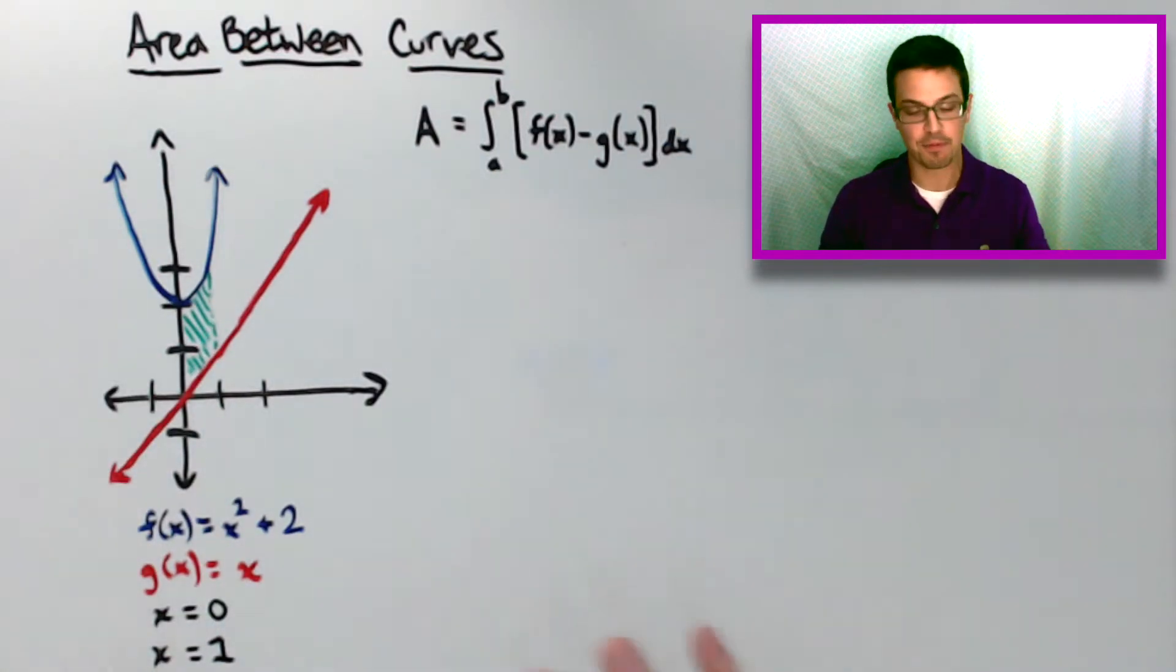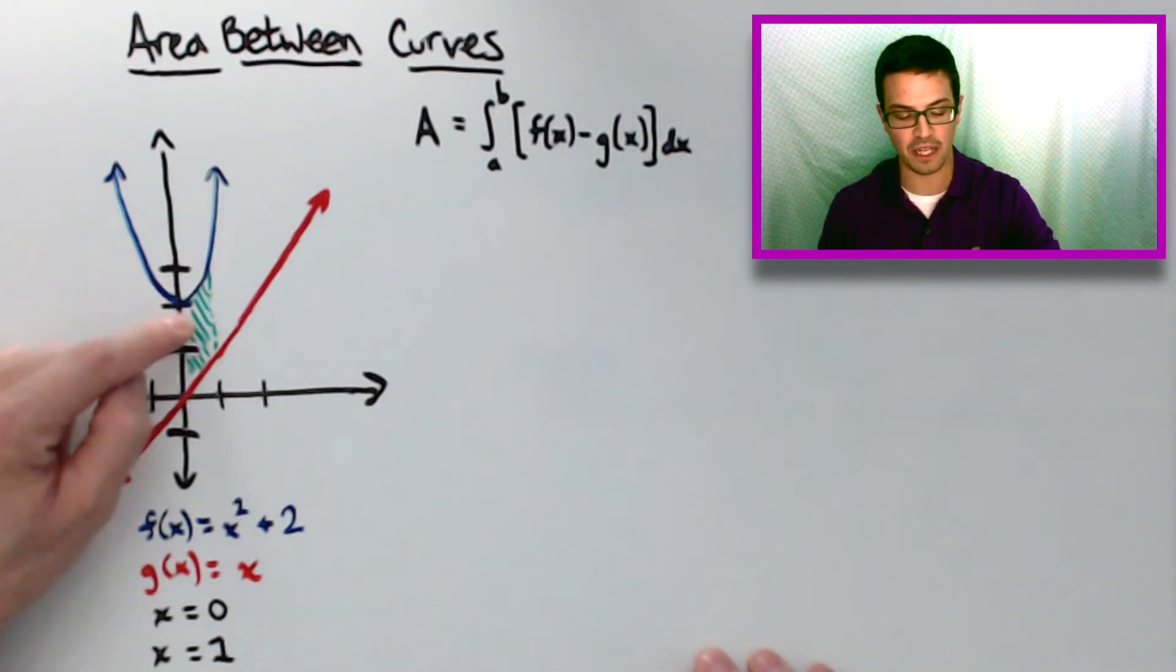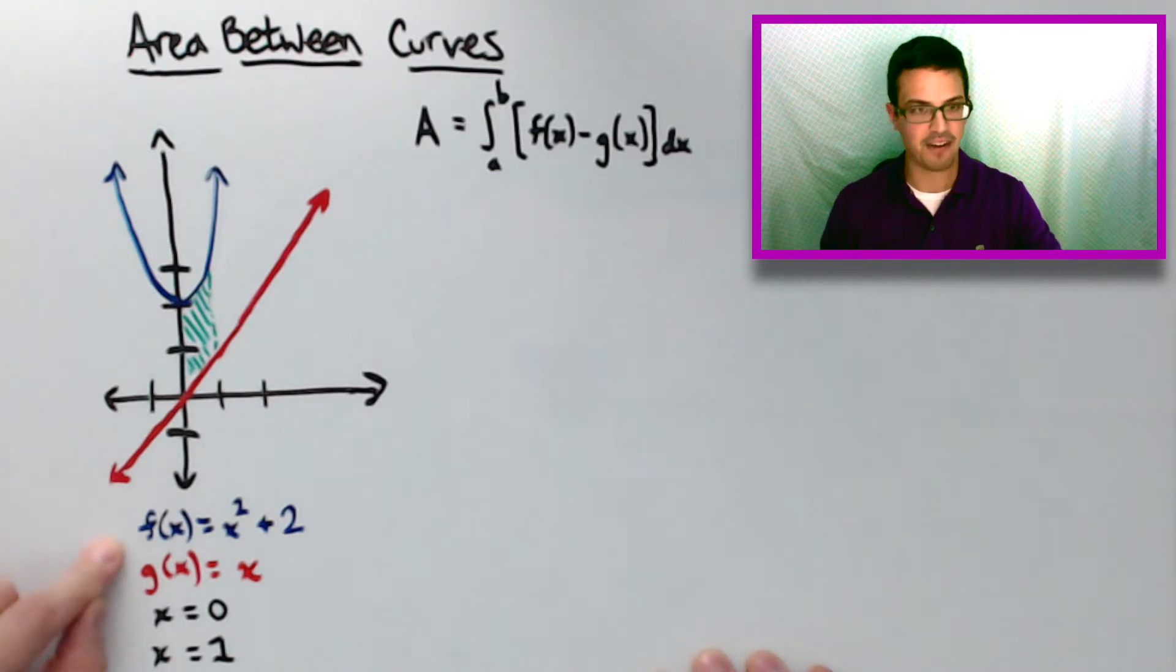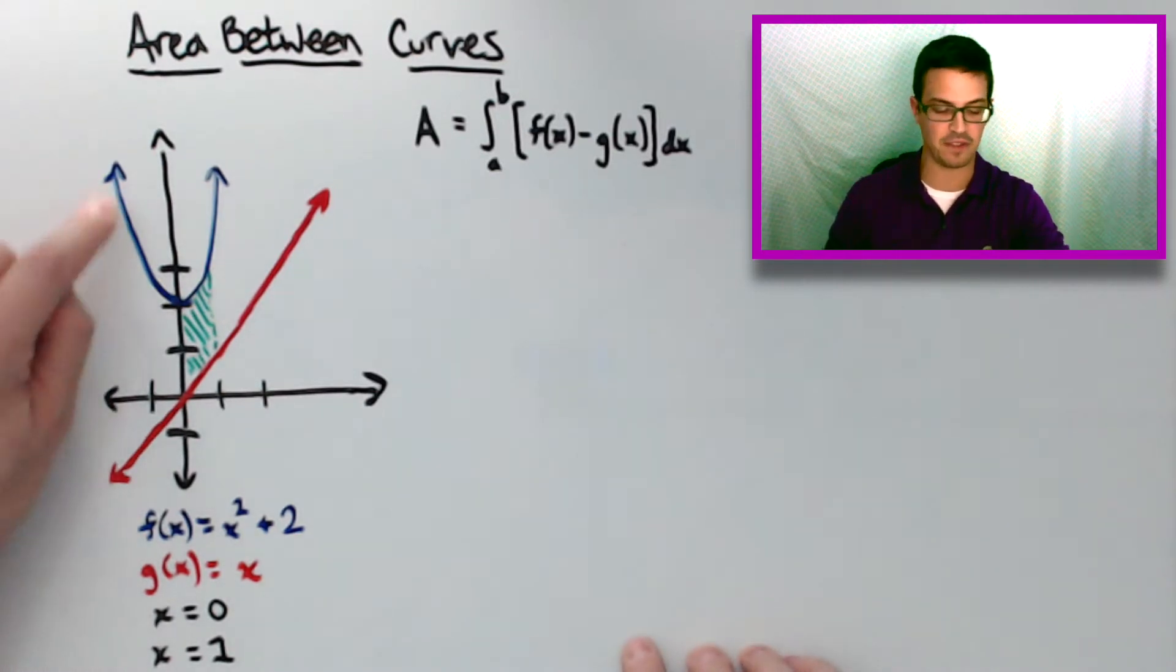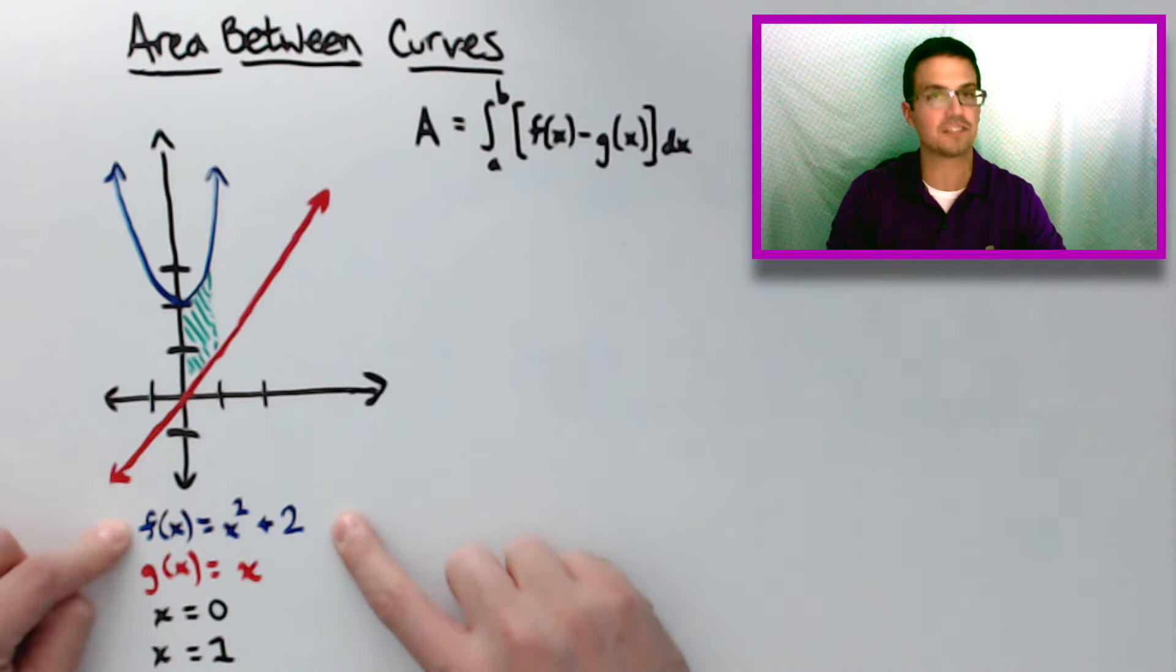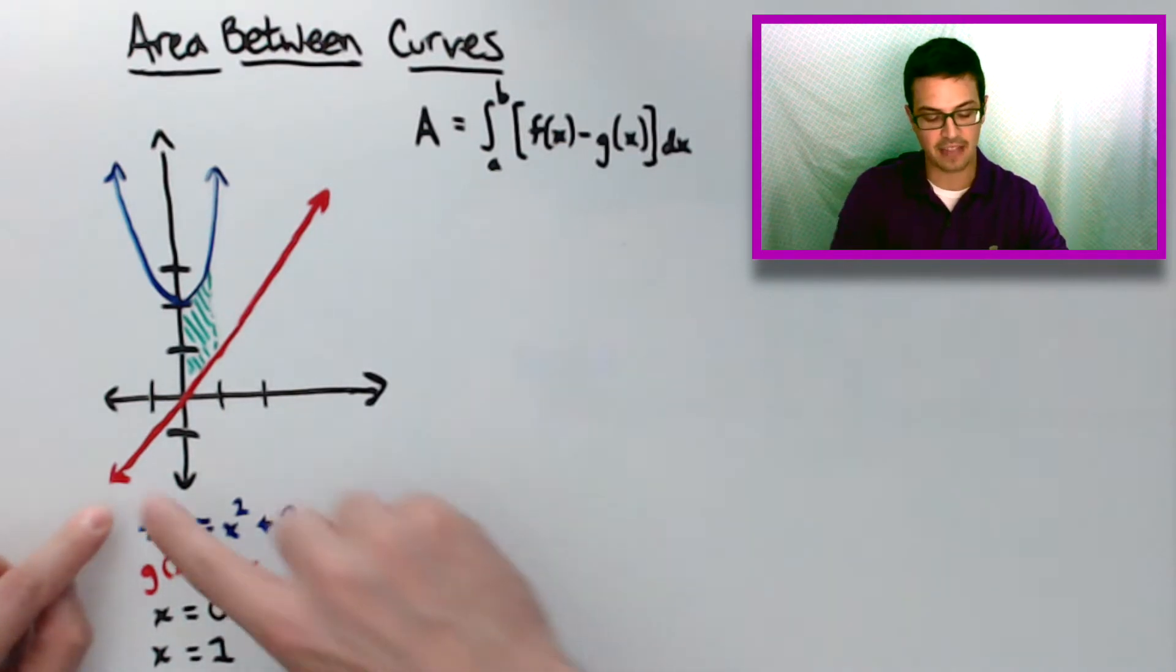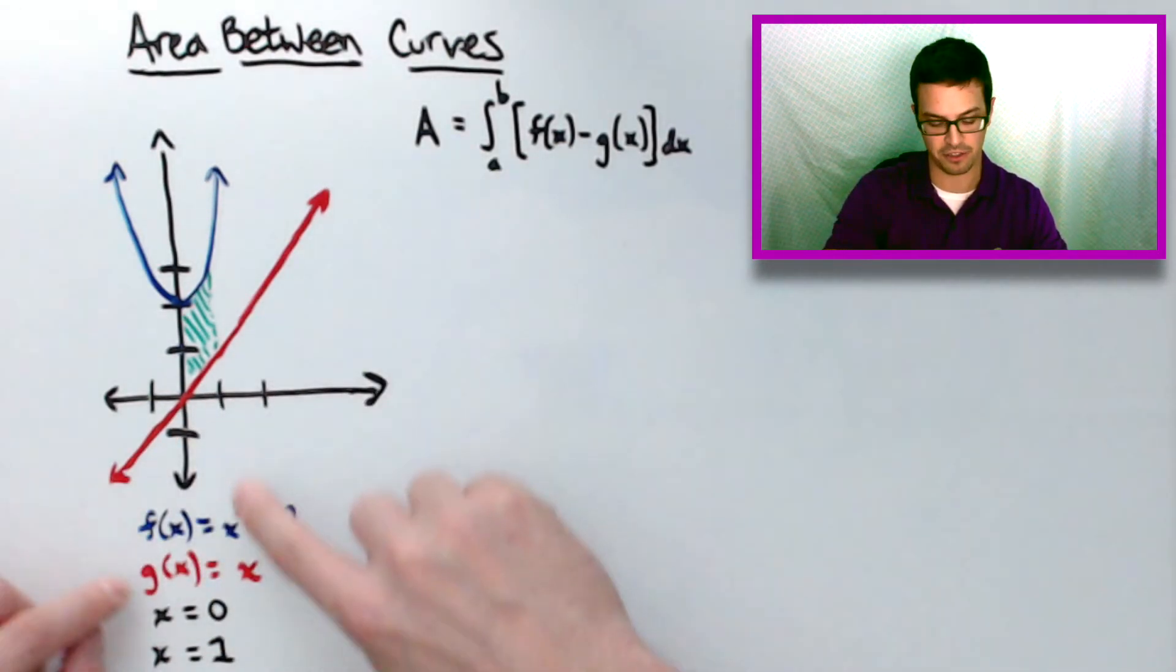And I'm trying to find, this problem is trying to find the area between these two and then bounded by the following down here. So we have f of x, we have this blue function right here, f of x is x squared plus 2. The g of x is just this x right here, so g of x equals x.